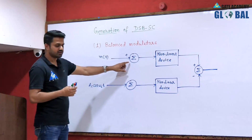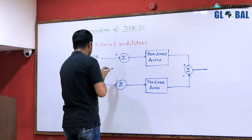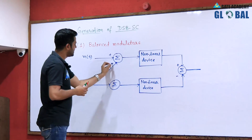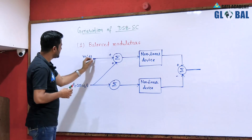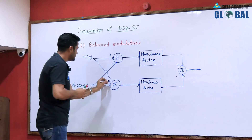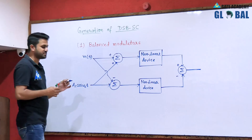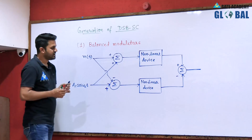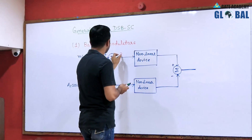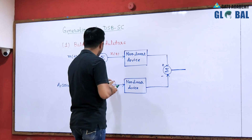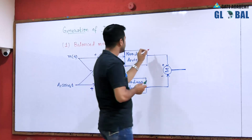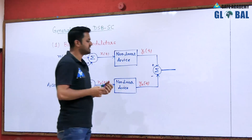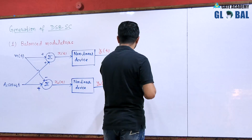In the first summer, we add the message signal and carrier signal. In the upper path the message signal and carrier signal are added, and in the lower path the message signal is inverted so the carrier and message signal are subtracted. The resultant signals x1(t) and x2(t) pass through the non-linear devices to generate y1(t) and y2(t). After taking the difference of y1 and y2, we get the signal z(t).